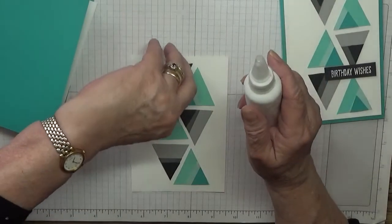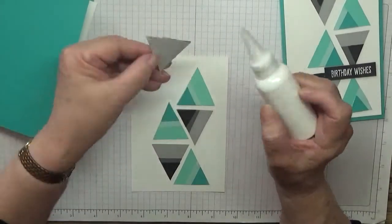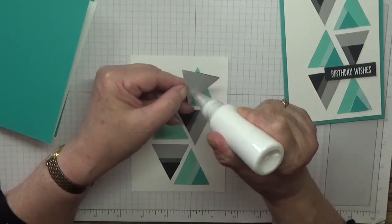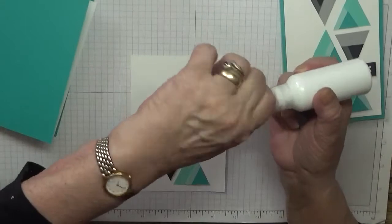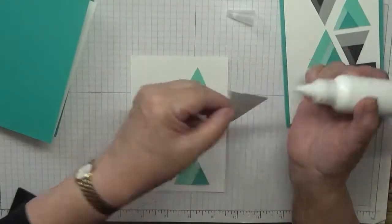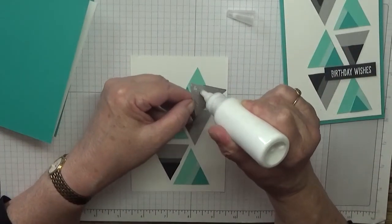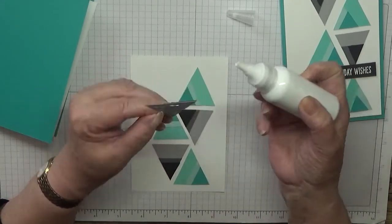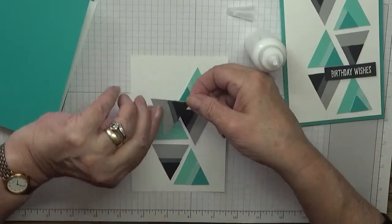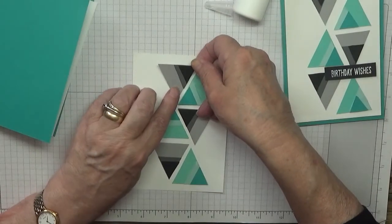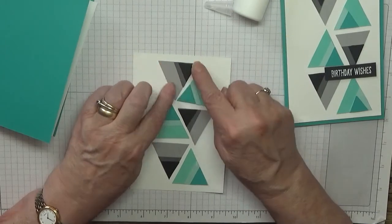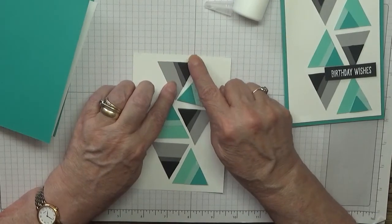So let's get sticking them down. It's quite a quick card, helps if you take the lid off, once you've done all your cutting out. Making sure they're straight.